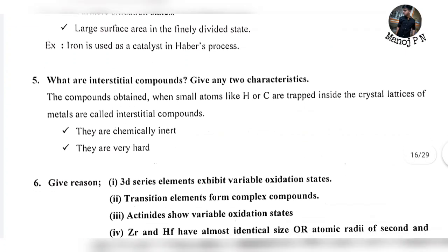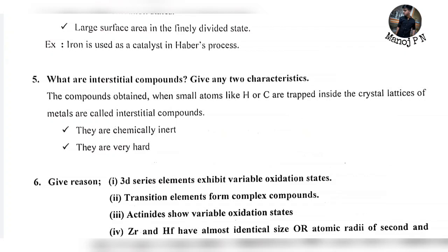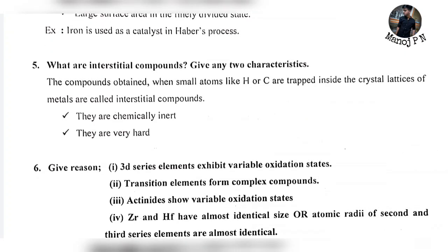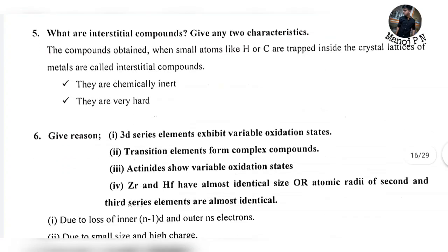Interstitial compounds are formed when small atoms occupy the interstitial sites of transition metals. These are called interstitial compounds. They are chemically inert and very hard.